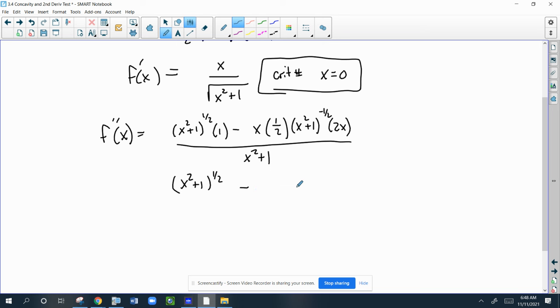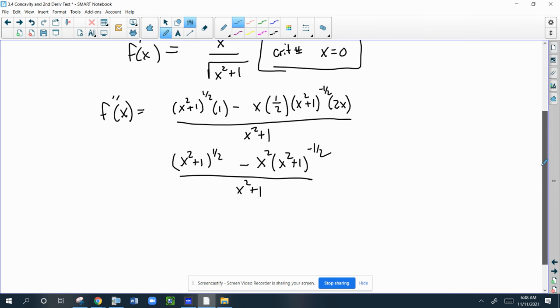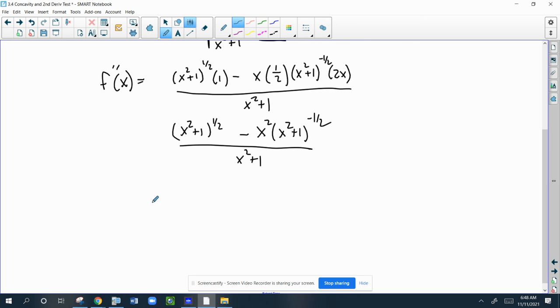Here we go. One half times two is one, X times X is X squared. So this cleans up pretty nicely. There's a common factor of X squared plus one to the negative one half up top.